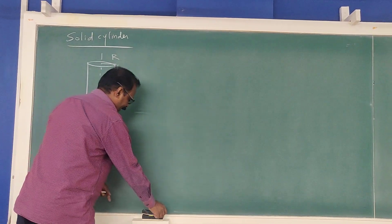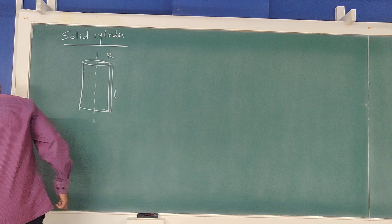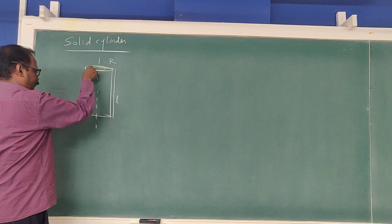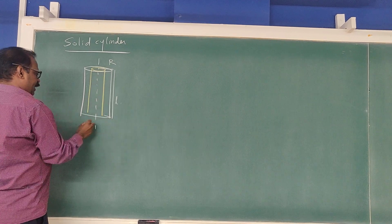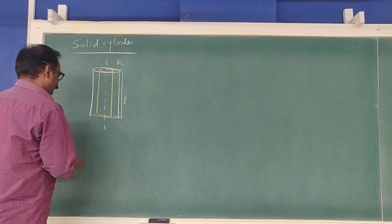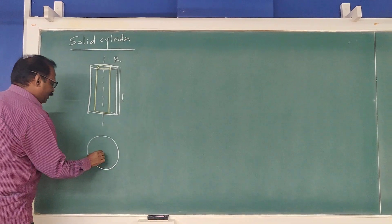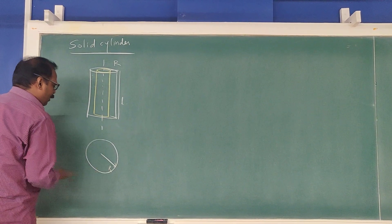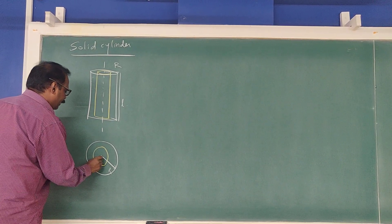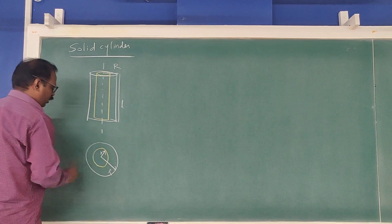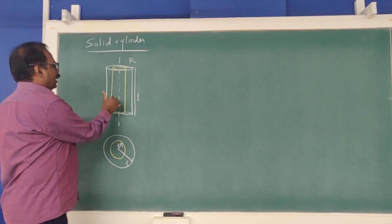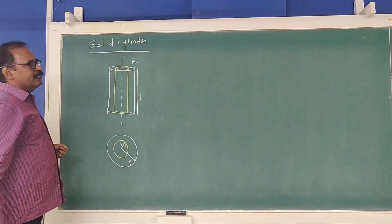We use the integration method. We consider one small element of the solid cylinder. This element is a hollow cylinder — in the top view it is a ring. This element has radius small r. So we integrate over such elements to find the moment of inertia of the solid cylinder.